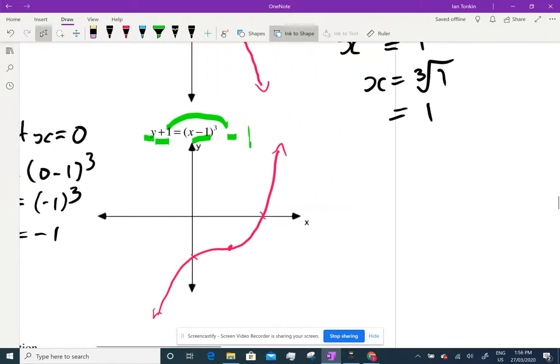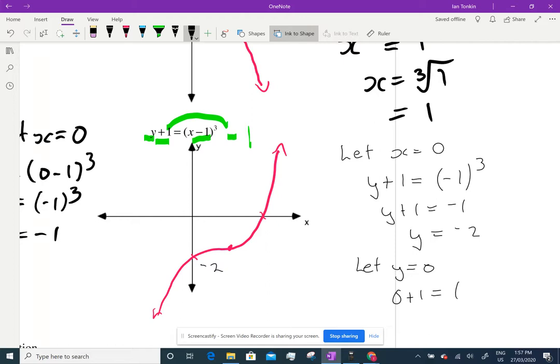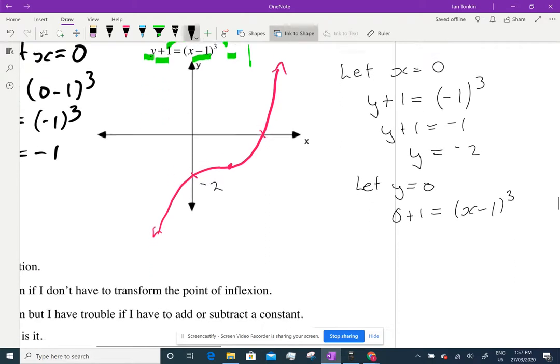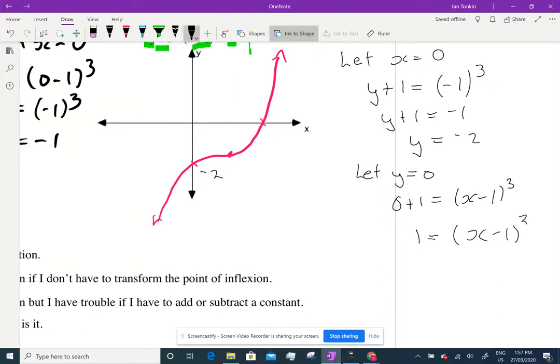Now, that point and that point. How do we find them? Just let x and y equal 0. So let x equal 0. And we get y plus 1 equals negative 1 cubed. y plus 1 equals negative 1 minus 1. y equals negative 2. Oh, that's negative 2. So my scale's really poor. Let y equal 0. 0 plus 1 equals x minus 1 cubed. Well, what do I do? 1 equals x minus 1 cubed. Let's cube root that 1. Cube root of 1 equals x minus 1. Cube root of 1 is 1. x minus 1... Oh, add the 1 over. 2 equals x... Oh, look at that. Sweet.